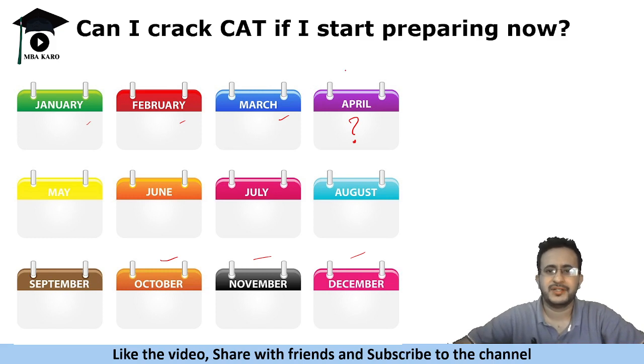So right now in April, you have seven plus months, roughly 220 to 230 days. Can someone crack CAT in 220 days if they're weak in some section or haven't yet prepared? Is it possible? If yes, then how? What are the things that should be done? Let's talk about these things in this video.